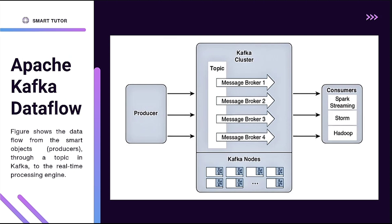The producer sends data to a channel, which is then called the Kafka cluster. There are multiple message brokers — 1, 2, 3, 4. These are Kafka nodes — multiple devices. We call it multiple nodes; we call it distributed.